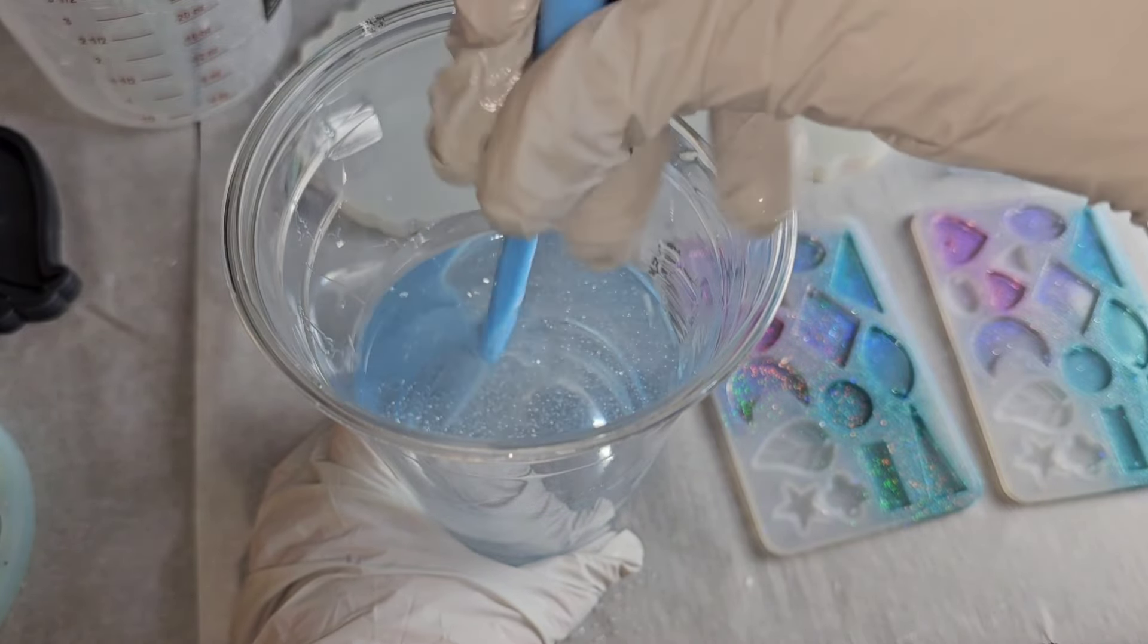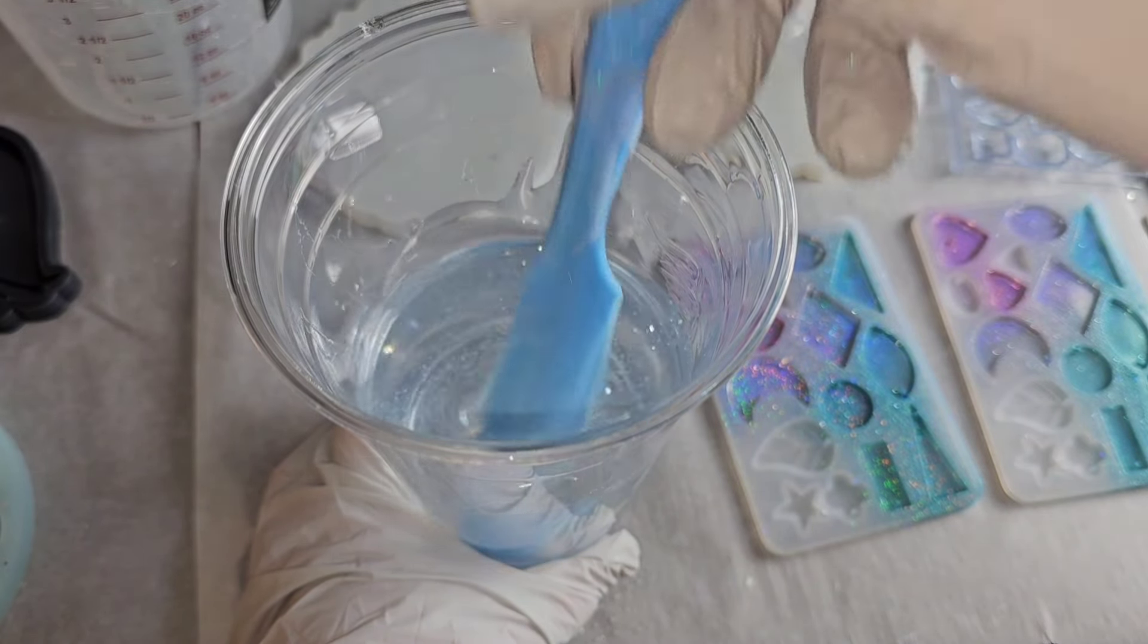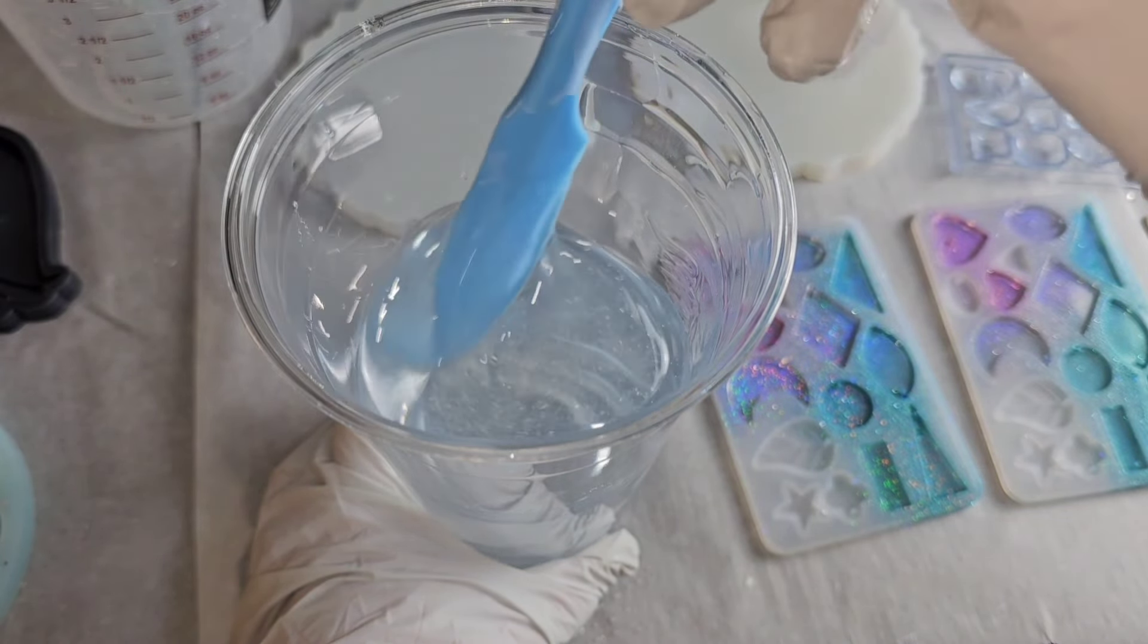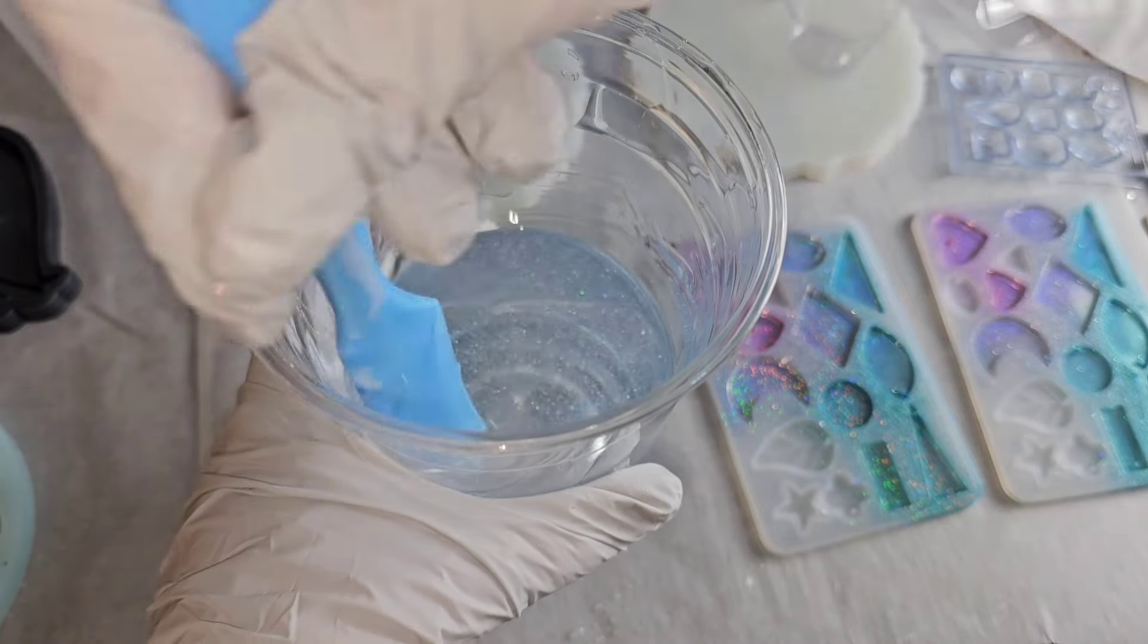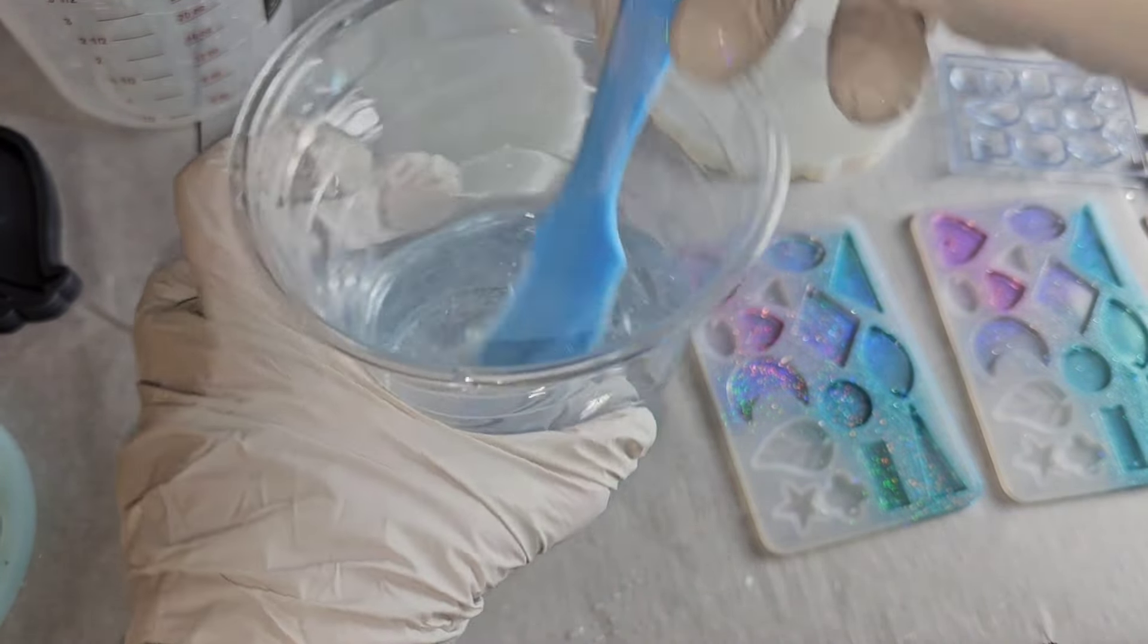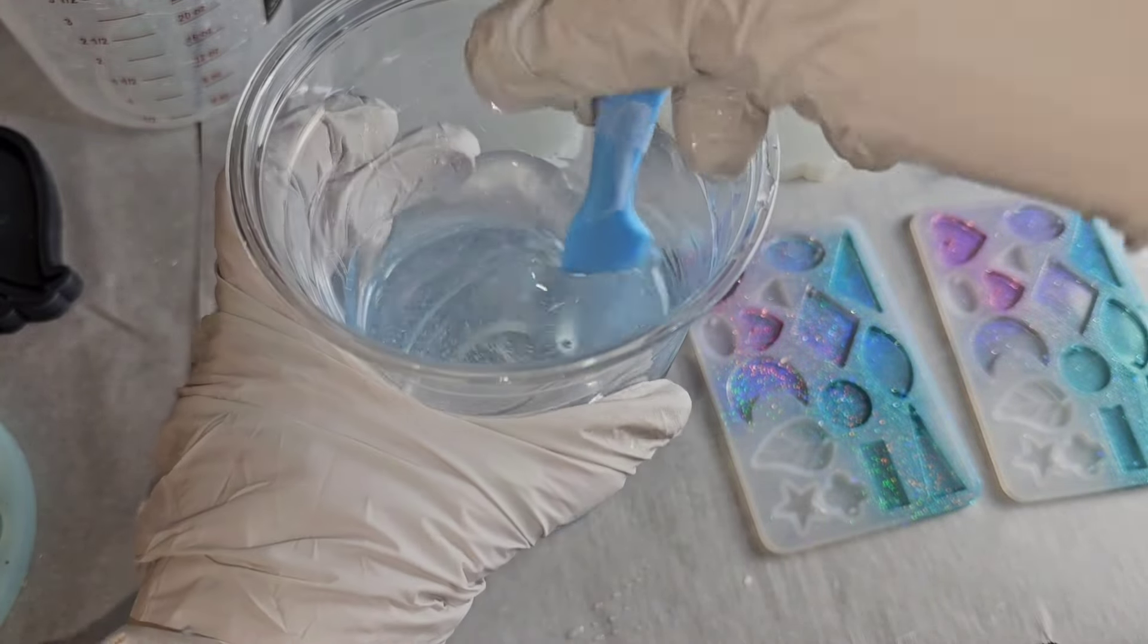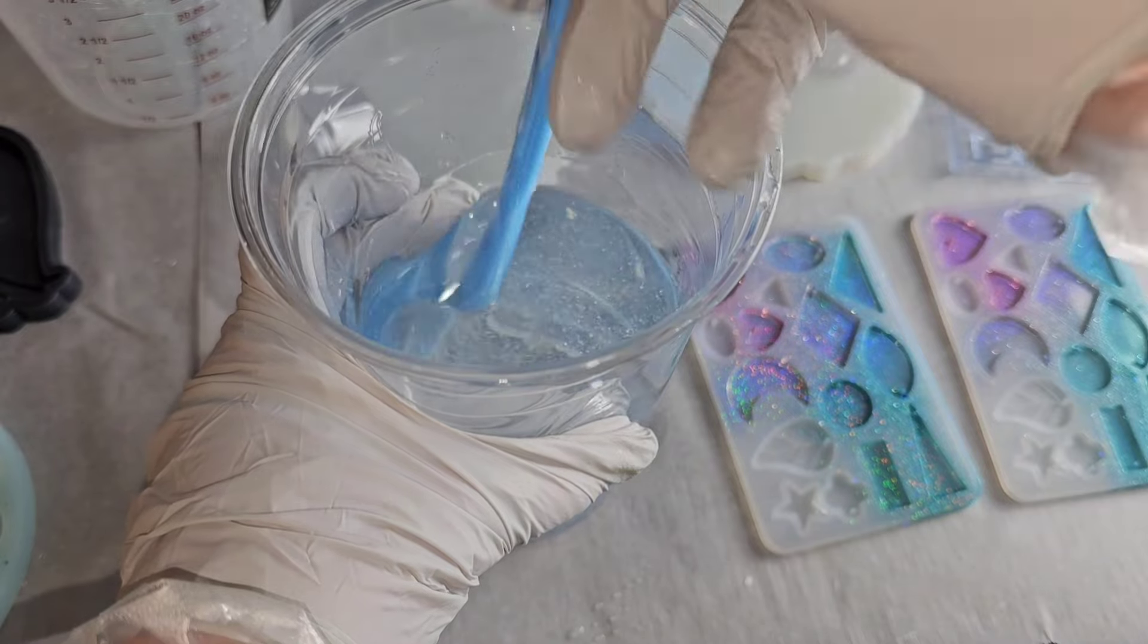A lot of times when people start out with resin, the resin might not set up properly and it's either due to under mixing or your parts A and B are not completely equal or your workspace is too cold. Resin likes to be at least 70 degrees Fahrenheit to set up properly.